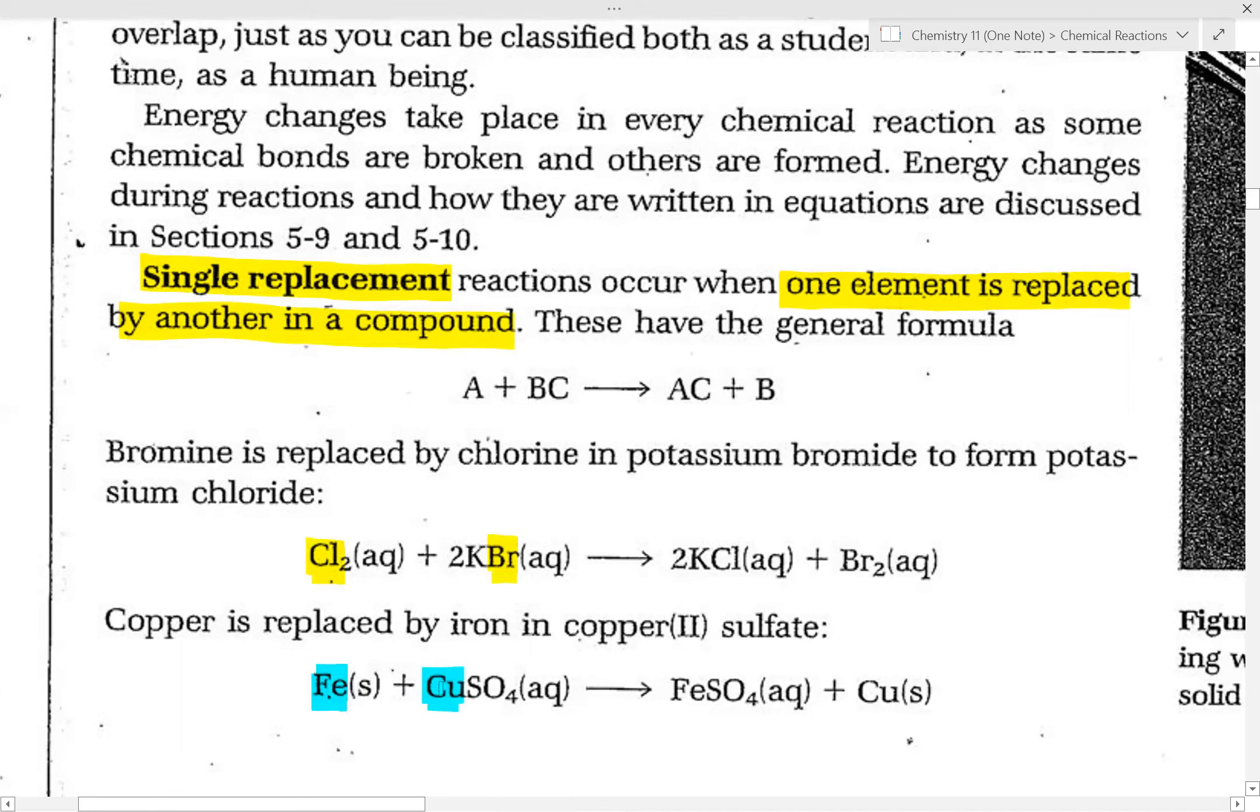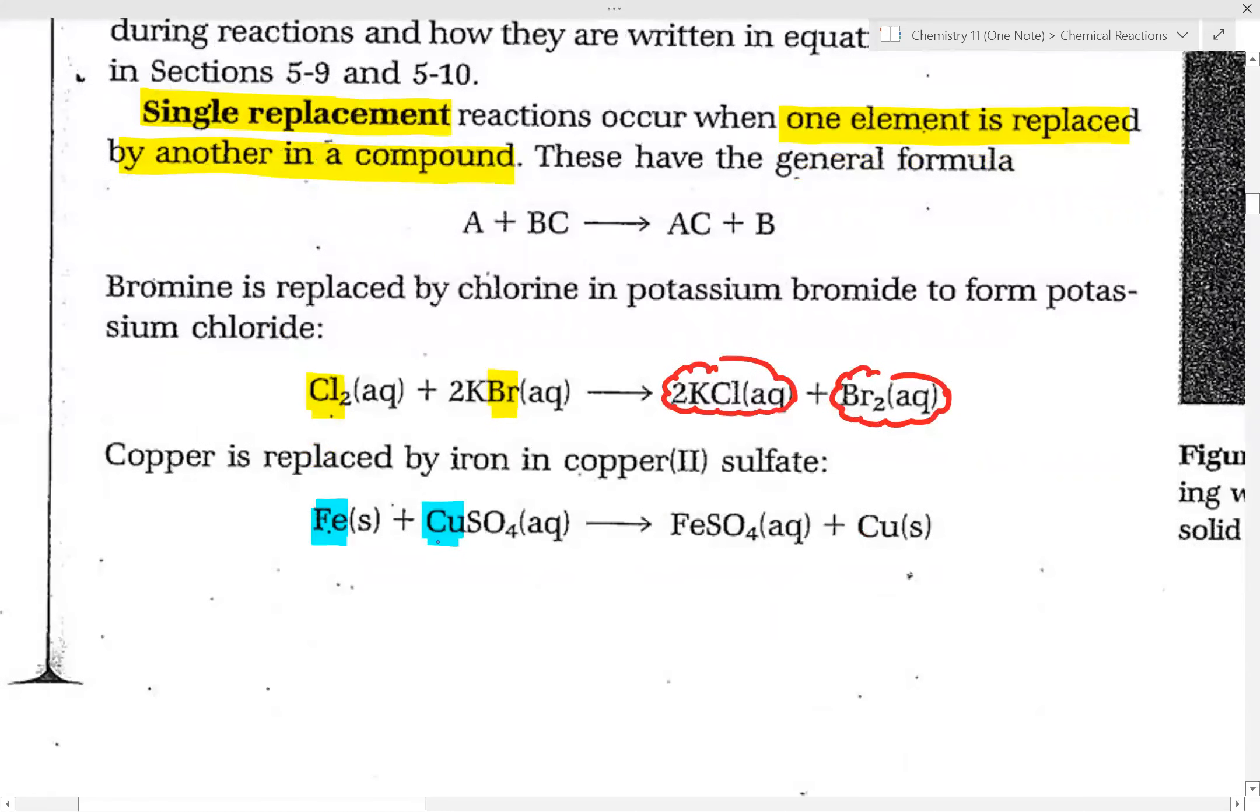One thing that you need to remember for single replacement is that the non metal replaces a non metal, a metal replaces the metal. So in the example with chlorine and potassium bromide, because chlorine is a non metal, it replaces the non metal in potassium bromide. And this is how you get potassium chloride and bromine gas as a product. In the second example, iron, which is a metal, replaces the copper in copper sulfate because copper in copper sulfate is the metal.